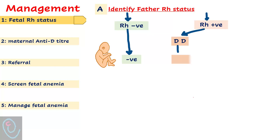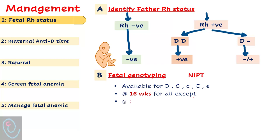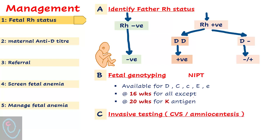If the father is homozygous, the fetus is RH positive. If the father is heterozygous, the fetus may be RH positive or RH negative. It is also reasonable to omit this first step and move directly to fetal genotyping using cell-free DNA. The fetal D, C, c, E, and e antigens can be detected by this method. It can be performed from 16 weeks for all antigens except K antigen, which is performed from 20 weeks. For other antigens, invasive testing may be considered if performed for other reasons such as karyotyping.